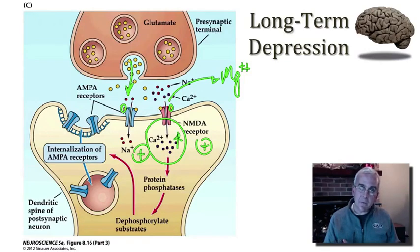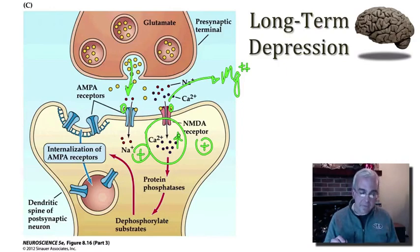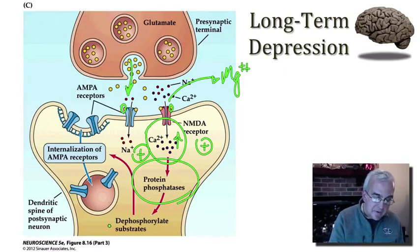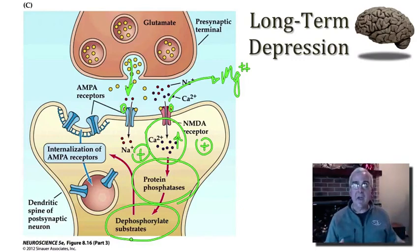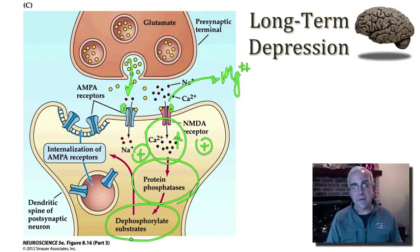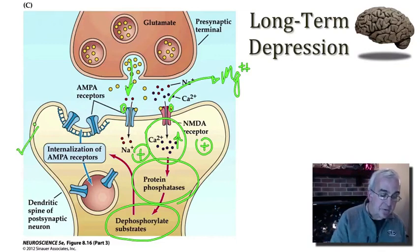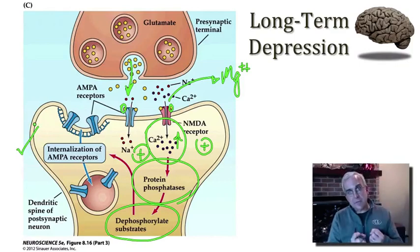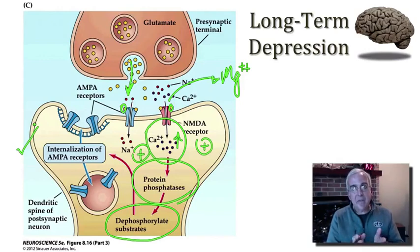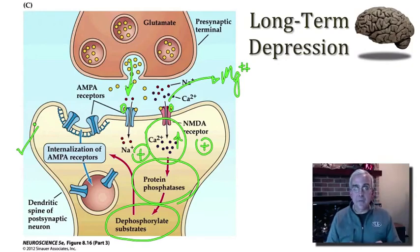That lower-level increase in post-synaptic calcium activates not protein kinases, but phosphatases. These protein phosphatases then dephosphorylate target proteins, and that seems to have the opposite effect on the proteins that traffic AMPA receptors between vesicular pools in the post-synaptic spine and the post-synaptic membrane. With the activation of these protein phosphatases, what we see is the internalization of AMPA receptors — their removal from the post-synaptic membrane — which is the weakening of the post-synaptic process.